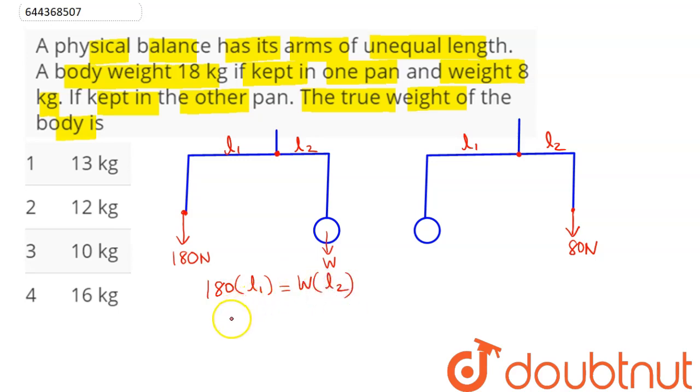So here we have the relation l1/l2 = W/180. In the similar manner, in this case also we have weight W acting downwards and here this is 80 newton. So W provides anti-clockwise torque and 80 provides clockwise torque. So W × l1 equals 80 × l2.